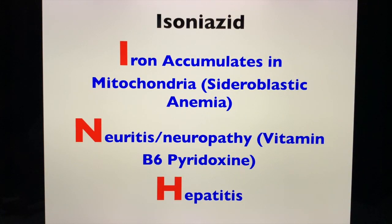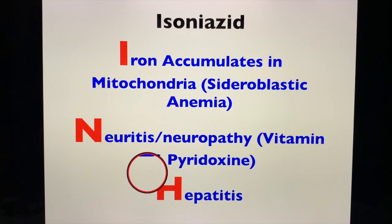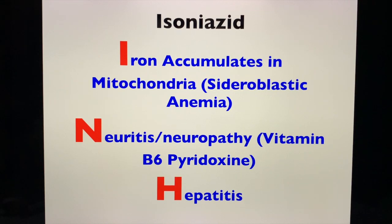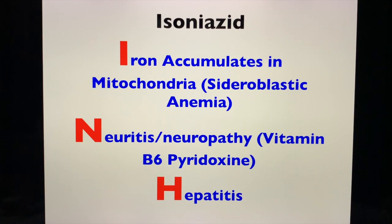For toxicities and side effects of isoniazid, remember the mnemonic I-N-H. First, isoniazid causes the accumulation of iron in the mitochondria, leading to sideroblastic anemia. Second, isoniazid is notorious for causing neuropathy or neuritis because it impairs the absorption of vitamin B6 or pyridoxine. Third, isoniazid is also hepatotoxic and can cause hepatitis.